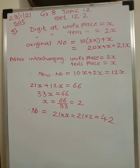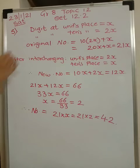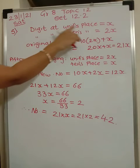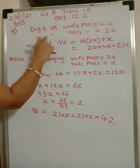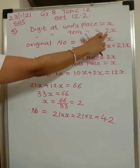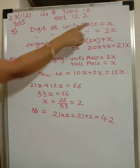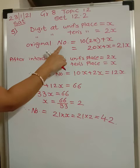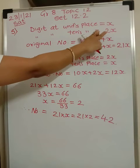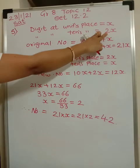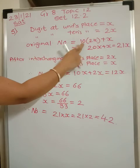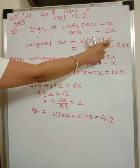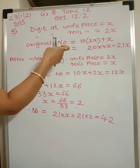Now see the fifth problem. In a two-digit number, the digit at the tens place is twice the digit at the units place. Let the digit at units place be x, so the digit at tens place is 2x. We always multiply the tens digit by 10 and add the units digit to get the number.